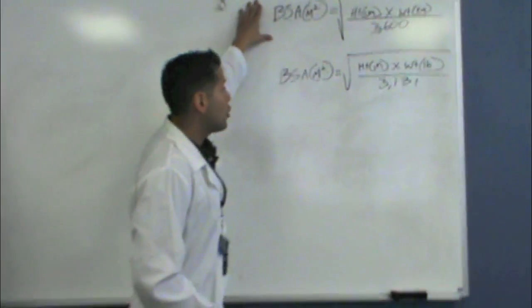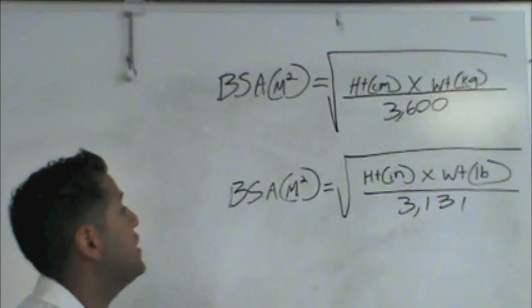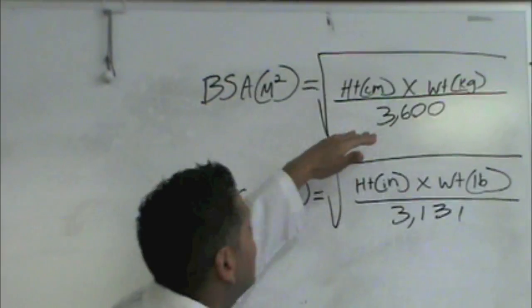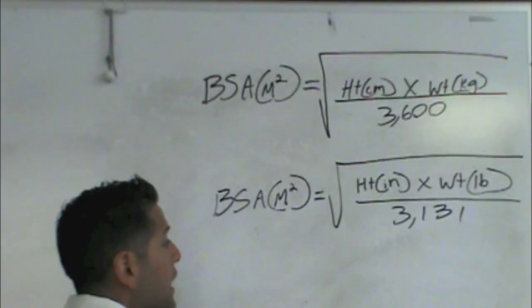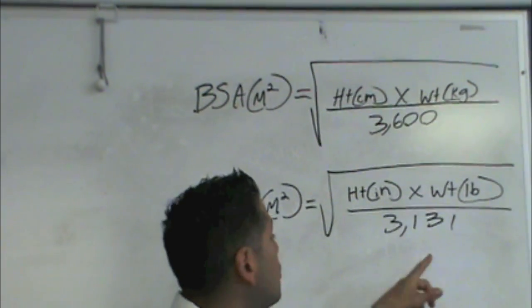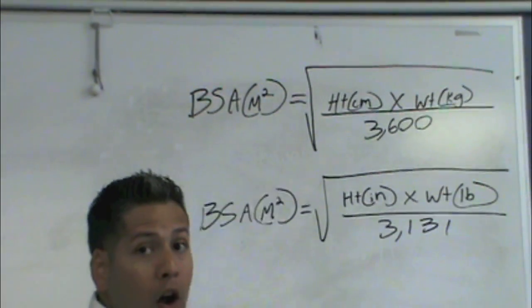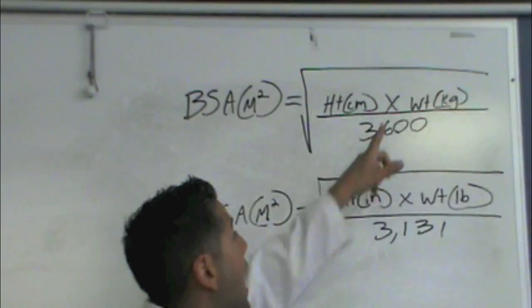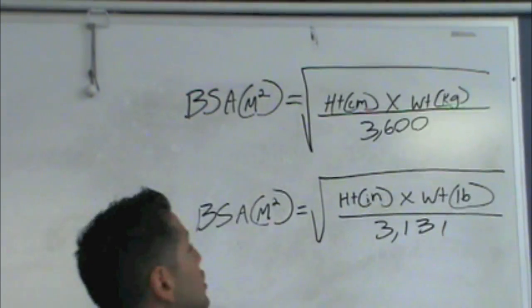If you can clearly see, we have the first equation up here and the second one. The first equation is very similar to the second one, but if you notice, the division is divided by 3,600 and the second one is divided by 3,131. Now, the body surface area is by meters squared. For the first equation, we're going to have the height in centimeters times the weight in kilograms divided by 3,600.